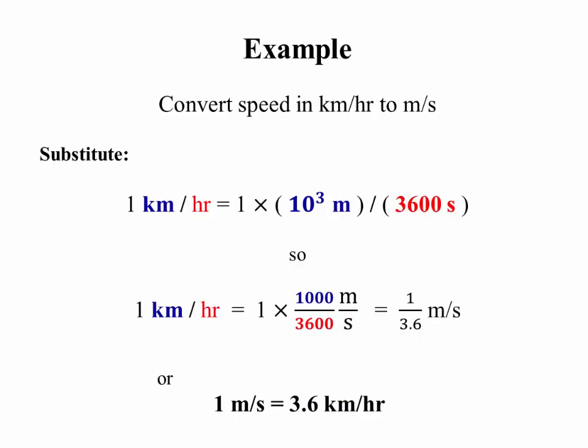Another example, kilometers per hour to meters per second. This is, again, just substitution. A kilometer is 1,000 meters. An hour is 3,600 seconds. So replace each of those and we get that 1 kilometer per hour is 1 over 3.6 meters per second. Or a meter per second is 3.6 kilometers per hour.